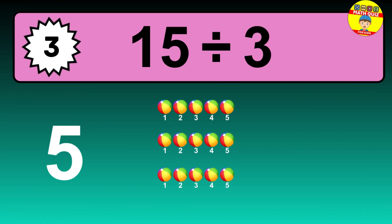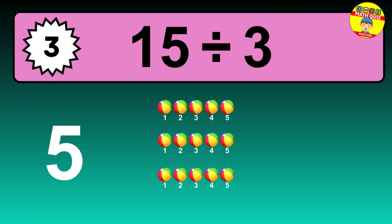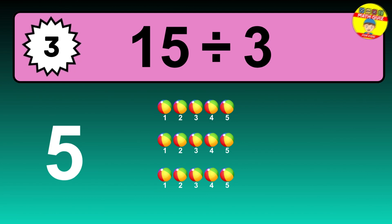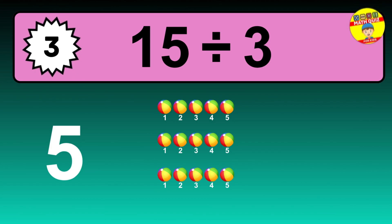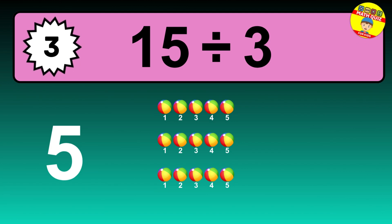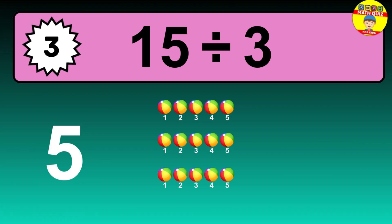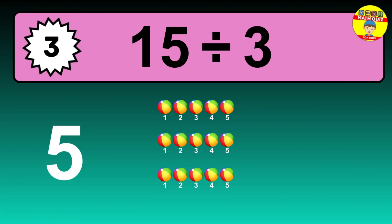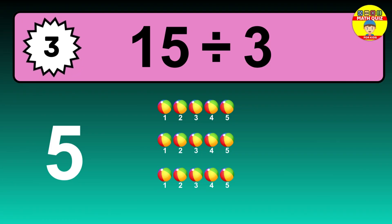Let's go to the solution. Divide the number 15 by 3. Each group contains 3 units, so dividing 15 by 3 results in 5 equal groups. Thus, the result is 15 divided by 3 equals 5.